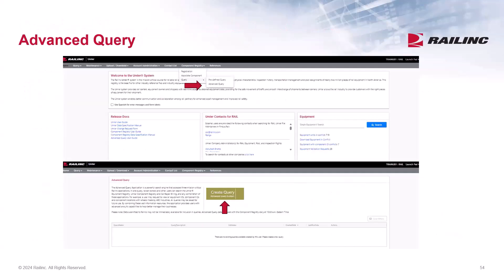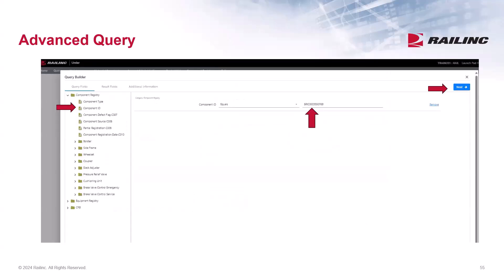The other query option available from the Component Registry is the advanced query. From the Component Registry main menu, select Query and then Advanced Query. This query allows the user to prepare custom queries using multiple criteria with Boolean operators, and the queries can be saved, run, and edited. When you click on Advanced Query, a new window will open with an option to create a query. Select the Create Query button and it takes you to the next screen. This is the query builder screen. You can select from the options on the left side to insert the fields you want to search by. There's a drop-down menu for each field that lets you select if the corresponding value is equal to, does not equal, is greater than, or less than.